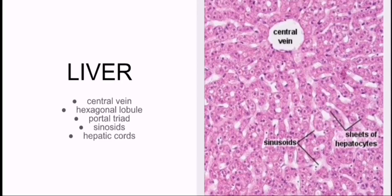Hey guys, today we're going to talk about how you can identify the slide of liver under the microscope. When you see the slide, you will see a central vein, and you will have some pinkish or darker colored cells which will be in the form of cords, radiating outward from the central vein.